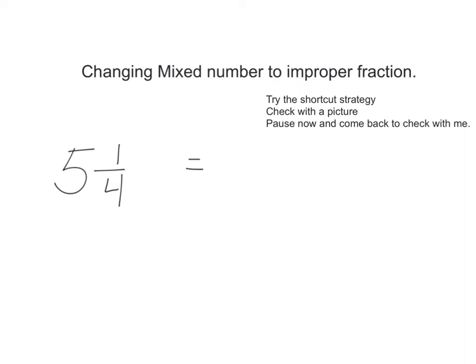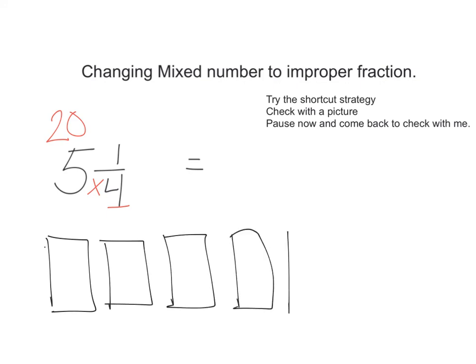So, I know that I can take my denominator and multiply by the whole number to get 20. So this is similar in our picture where we have the 5 whole sections. I know that each section is full.